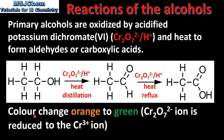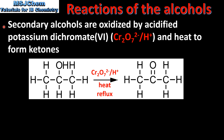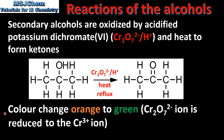In this reaction we have a color change from orange to green. Next we look at secondary alcohols. Secondary alcohols are oxidized by acidified potassium dichromate and heat to form ketones. In this reaction we have a secondary alcohol which is propan-2-ol. The oxidizing agent is acidified potassium dichromate, the conditions are heat and reflux, and the product is a ketone which is propanone. In this reaction we also get a color change from orange to green.